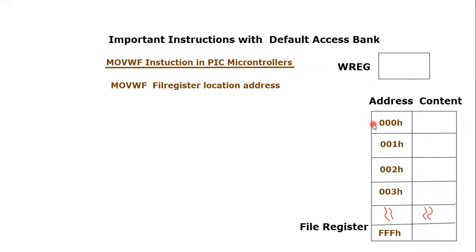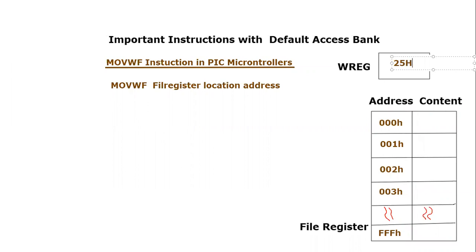The file register has many locations available — almost 4,096, or 4K locations — generally for the PIC 18F microcontroller or PIC 18F452. We have already covered an earlier instruction, Move Literal to Working, which puts certain data inside the working register.